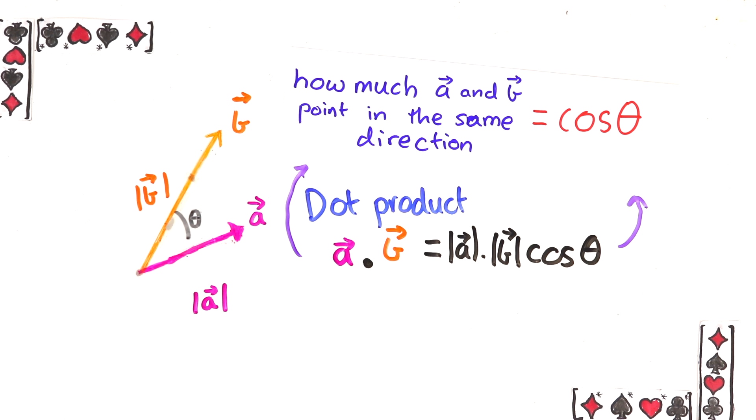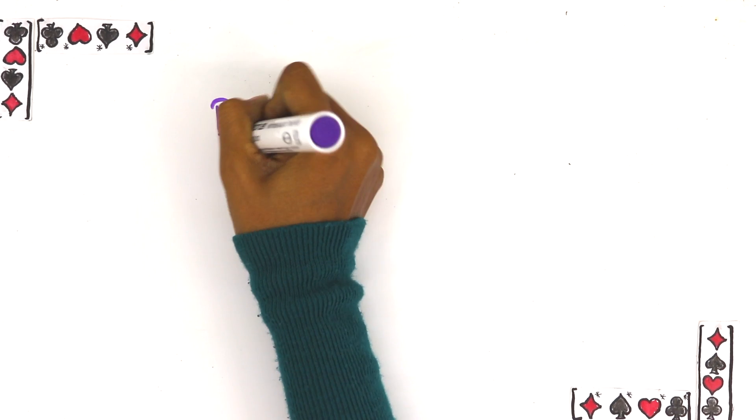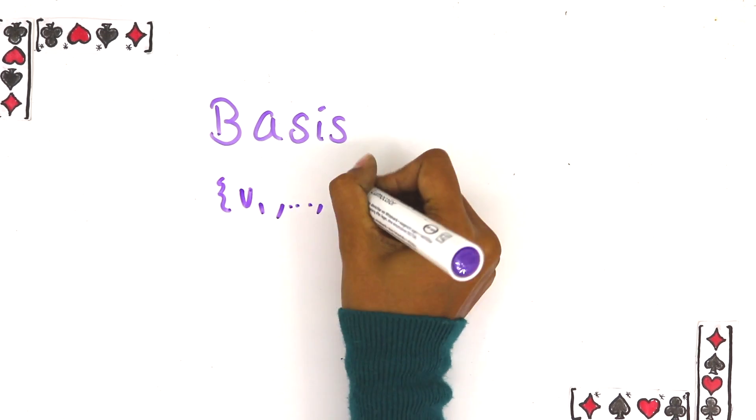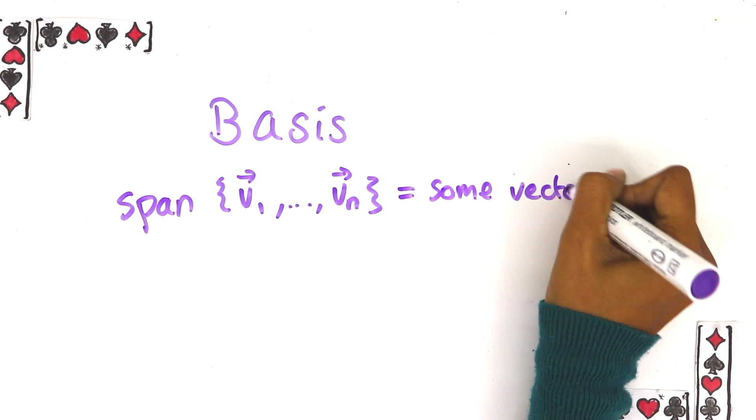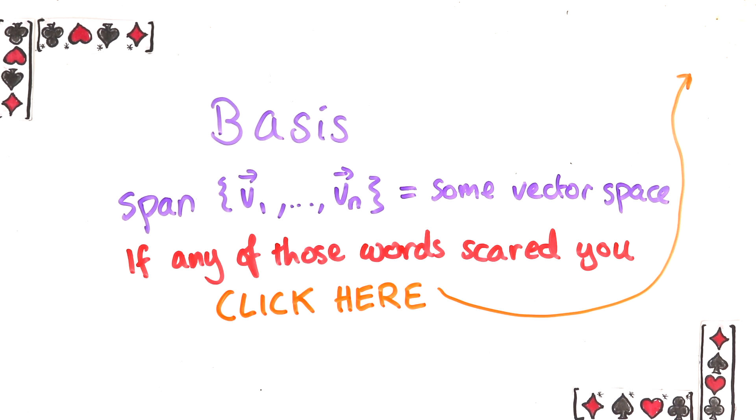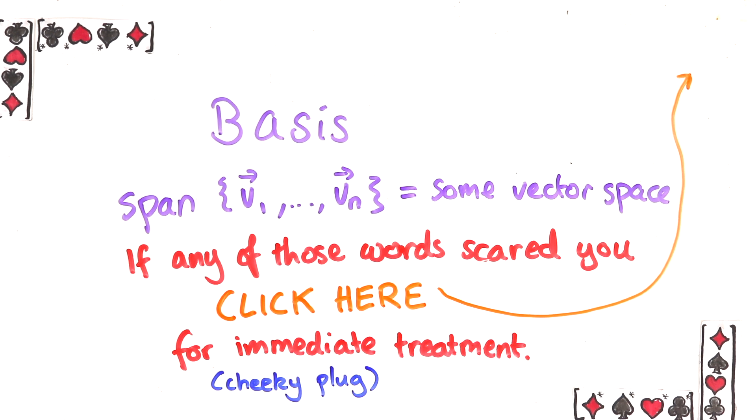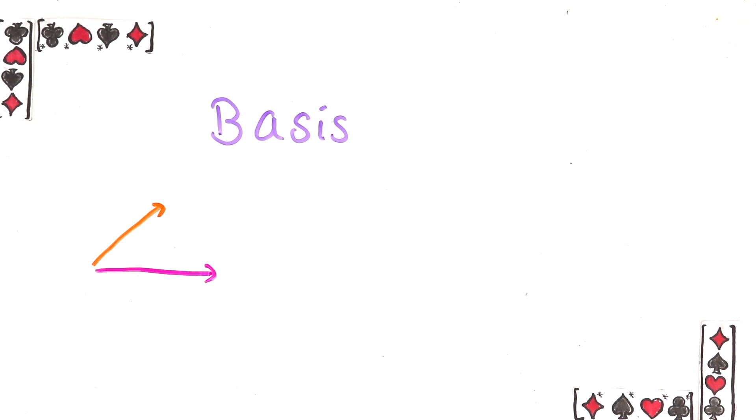As we know a basis is just a bunch of vectors that span a vector space without redundancy. In other words any vector can be written as a linear combination of the basis vectors uniquely. If you're shaky on what any of those terms meant I explained it in my video on vectors so go have a look. But okay assuming you're happy with basis vectors you'll know that these two vectors are a basis for 2d space. But so are these and even these.